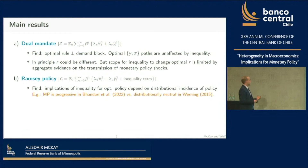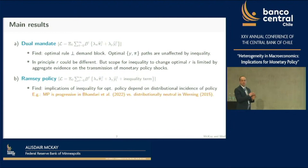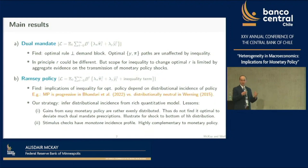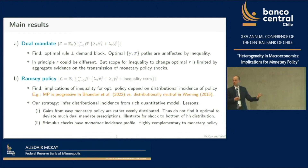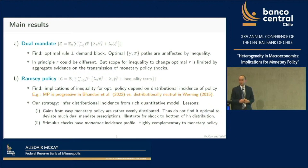In the Bhandari et al. paper, expansionary monetary policy is strongly progressive, so policy exerts a lot of influence on the inequality term. At the opposite extreme, Yvonne Verning has an aggregation result where policy is completely unable to affect that inequality term, so optimal policy doesn't take it into account. We write down a fairly rich model and find a world very close to the Verning result: the impact of expansionary monetary policy on inequality is very small, so the optimal Ramsey policy looks very similar to the dual mandate objective.